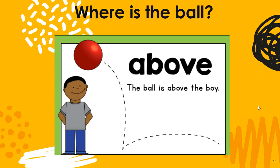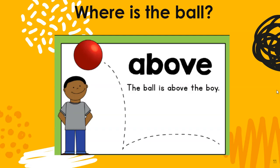Where is the ball? Above. The ball is above the boy. Read it with me: The ball is above the boy. See the difference between on and above — on means it had to be touching him, but above means it's not touching him. If he looks up, it is directly above his head, but it's not touching him.